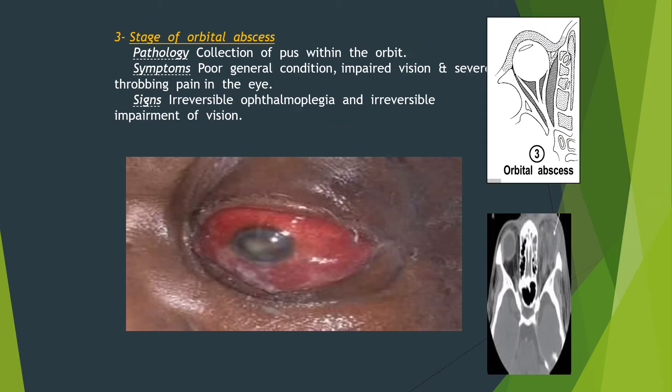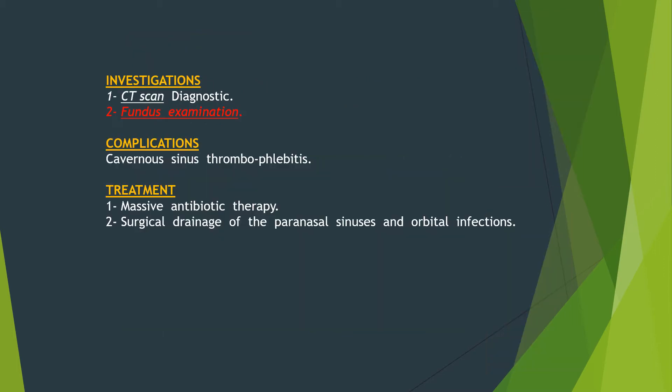In the stage of orbital abscess, collection of pus is now inside the orbit. The symptoms will be poor general condition, impaired vision, and severe throbbing pain in the eye. At this stage, there is irreversible ophthalmoplegia and irreversible impairment of vision — the patient will lose the eye.